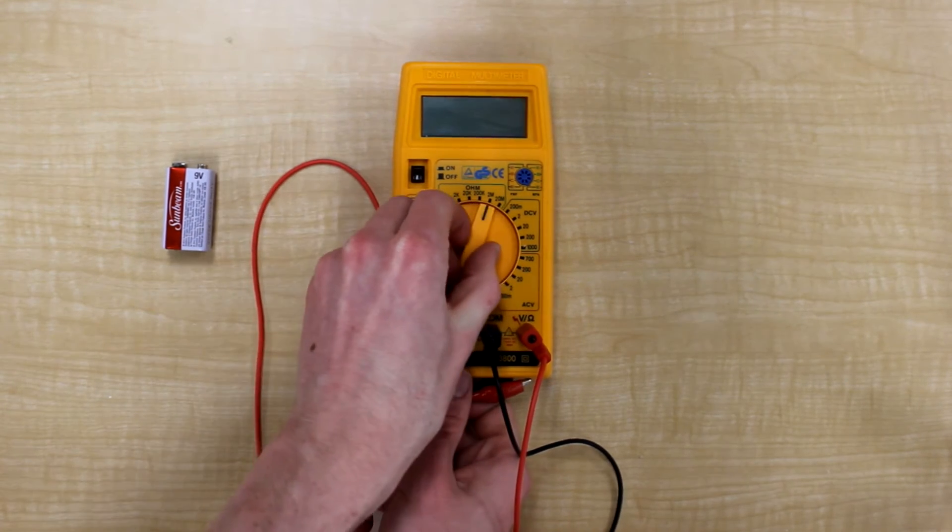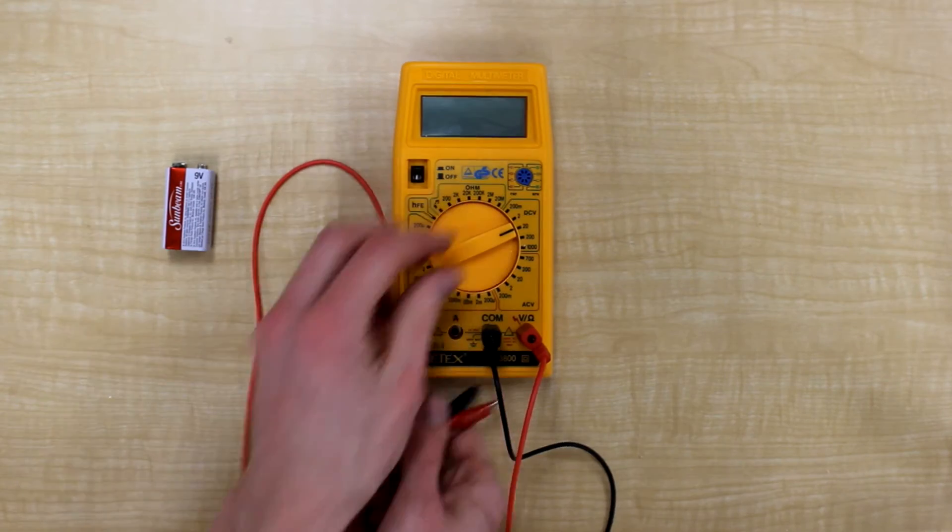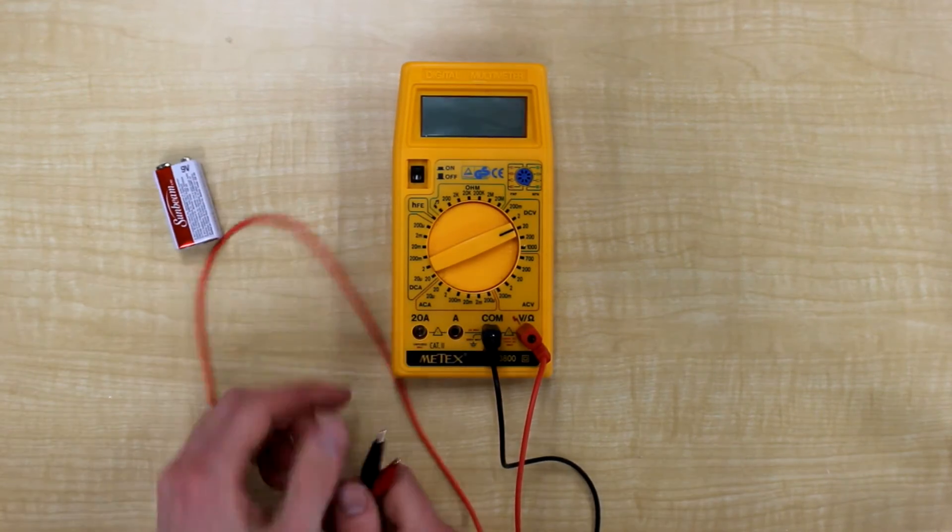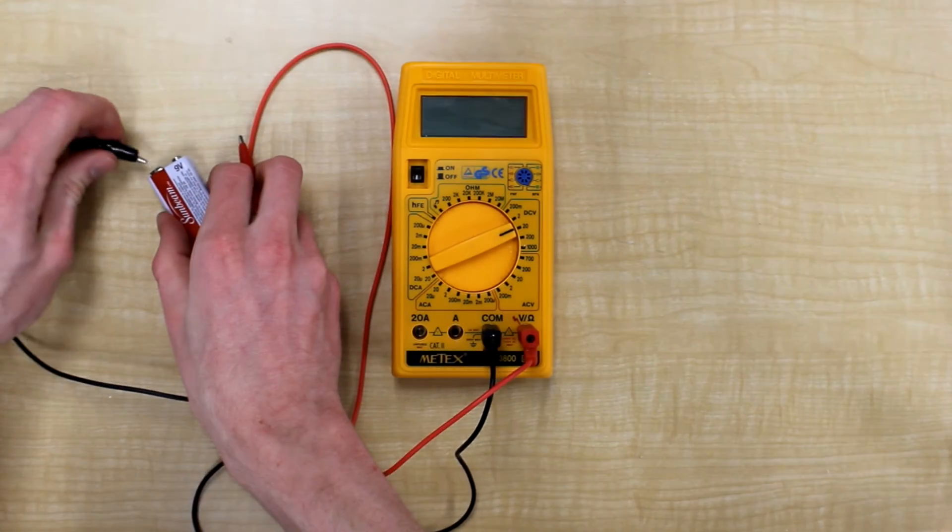First, make sure you change to DC or AC voltage, depending on which voltage you want to measure. Once you have it on the DC voltage, we can measure this DC battery.